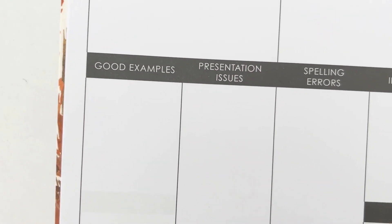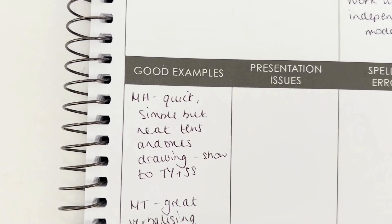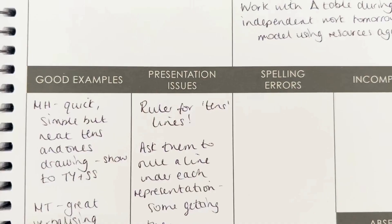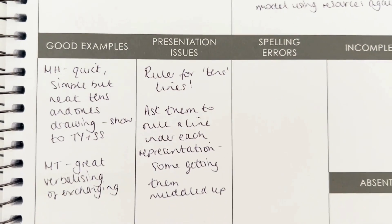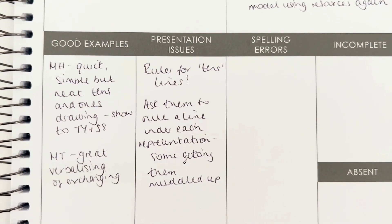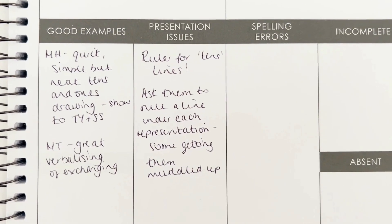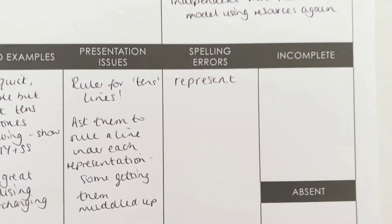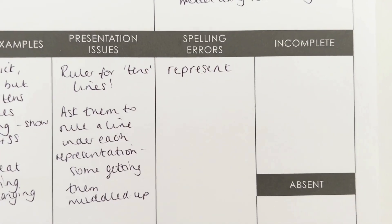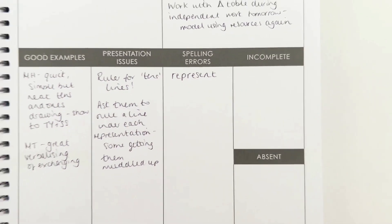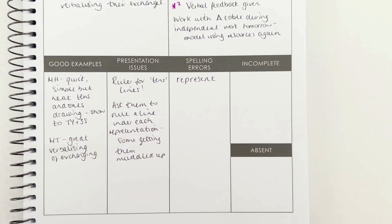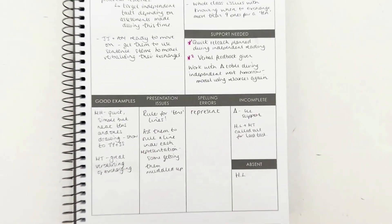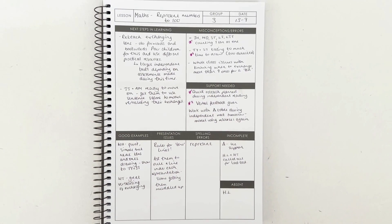You've then got some space at the bottom to record some good examples that you might want to share as a whole class. I've then got space to record any presentation issues — for example, in my imaginary Year 3 class, they're not using rulers. Then I can record spelling errors, which might be happening as a whole class or with particular students that I need to address. Finally, I can identify any incomplete work or students that were absent during the lesson.